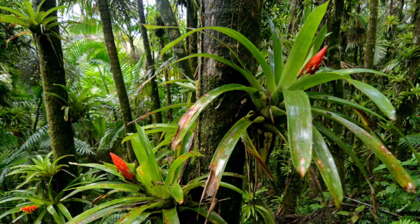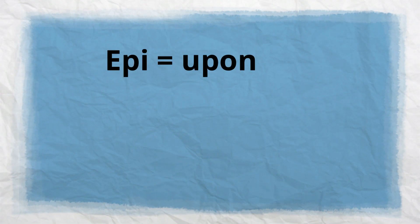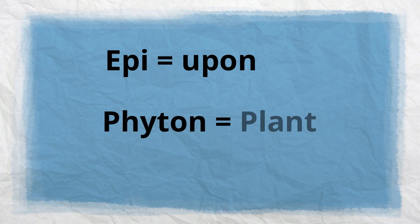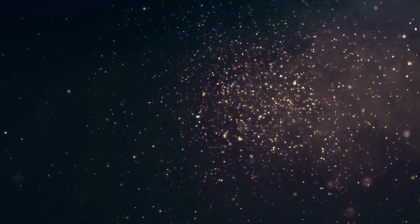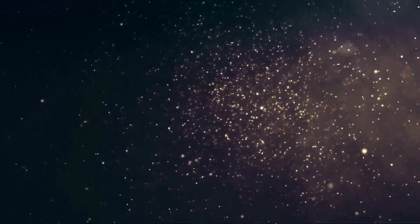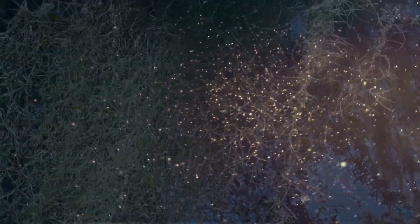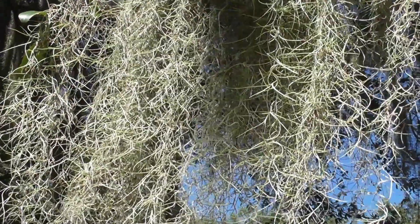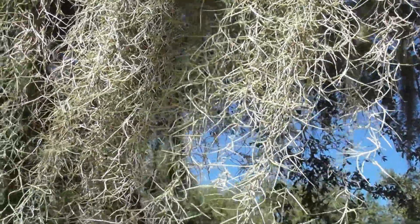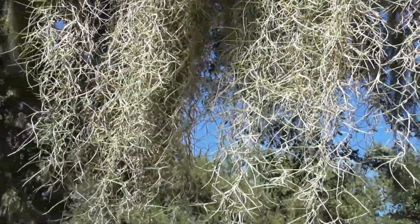The term epiphyte comes from the Greek term epi, meaning upon, and phyton, meaning plant. The Spanish moss does not get nutrients from the tree it's found on, but relies on the dust and moisture in the air. For the most part, the tree is not harmed, and the Spanish moss and tree enjoy a commensalistic, symbiotic relationship.